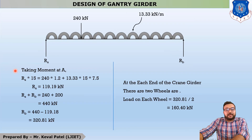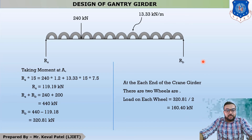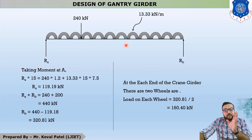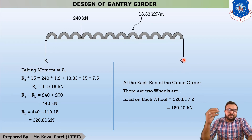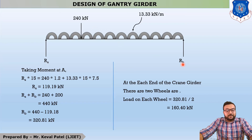Now we find RA and RB — how much load is transferred to the left gantry girder and how much to the right. When the trolley moves to the left, RA is maximum; when it moves right, RB is maximum. Using equilibrium: RA + RB = 240 + 13.33 × 15 = 240 + 200 = 450 kN... wait, let me recalculate. RA + RB = 240 + 13.33 × 15 = 450 kN.